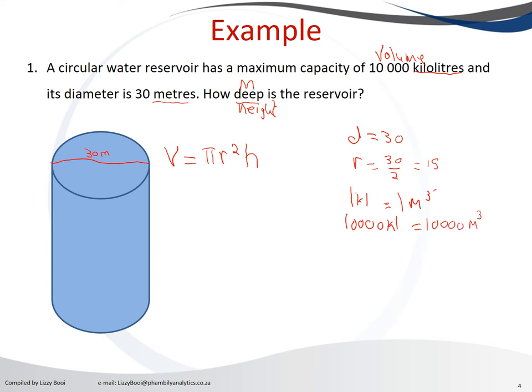It means now we can substitute into the formula because we will be working with meters. So 10,000 meter cube equals pi times our r, which is 15 meters squared, times height.